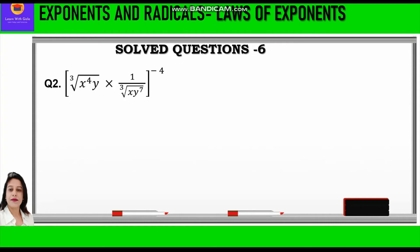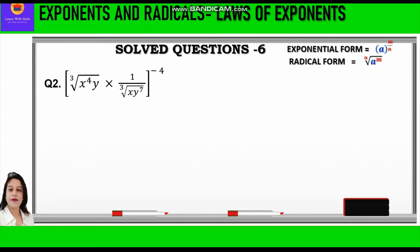Now let us take up question number 2. It is given: cube root of x raised to power 4 into y, into 1 upon cube root of x into y raised to power 7, and the whole raised to power minus 4. Over here we have a radical form — nth root of a raised to power m — which we convert into exponential form: a raised to power m by n, where m becomes the numerator and n becomes the denominator. Accordingly, we write x raised to power 4 into y whole raised to power 1 by 3, into 1 upon x into y raised to power 7 whole raised to power 1 by 3, with the whole bracket raised to power minus 4.